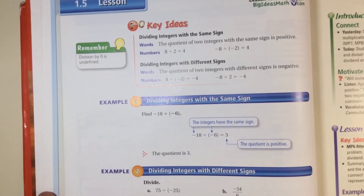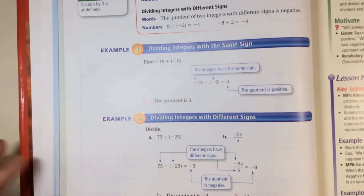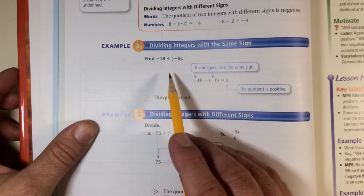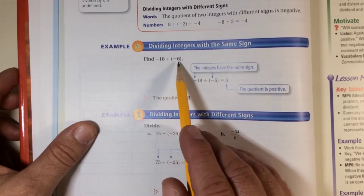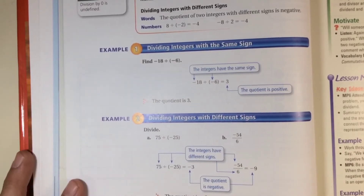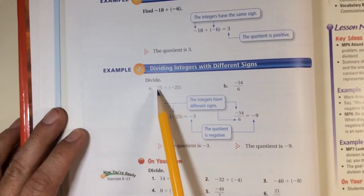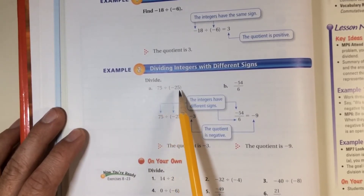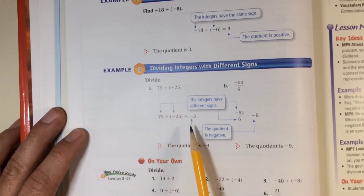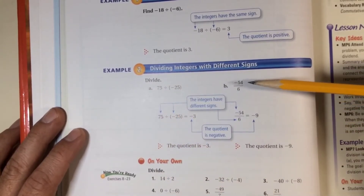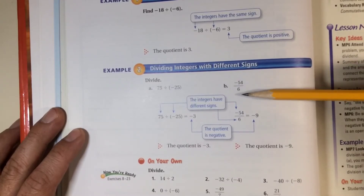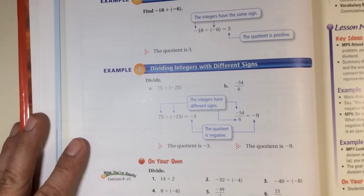Let's look at a couple of examples. Negative 18 divided by negative six — same sign, so I know my answer is going to be positive. 18 divided by 6 is 3, so it's positive 3. With different signs: 75 divided by negative 25 — I know 75 divided by 25 equals 3, but different signs, so my answer is negative 3. Negative 54 divided by 6: 54 divided by 6 is 9, but one of each, so my answer is negative 9.